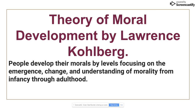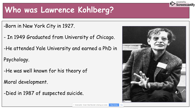Lawrence Kohlberg stated in his theory that people develop their morals by levels, focusing on the emergent change in understanding of morality from infancy through adulthood. Kohlberg was an American psychologist born in New York City in 1927. By 1949 he graduated from the University of Chicago, attended Yale University, and earned a PhD in psychology. He was well known for his theory of moral development, and he died in 1987.